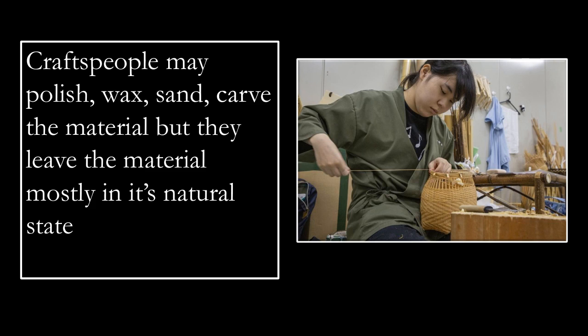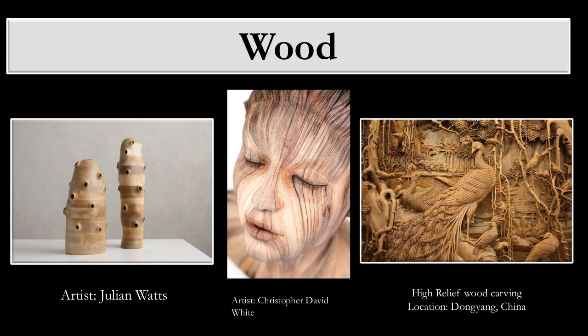Craftspeople may polish, wax, sand, or carve a material, but they leave the material mostly in its natural state. If we look at this woman over here, she's beginning to weave a basket with this natural, straw-like fiber material. These are all examples of wood. The artist has put his artistic style on it, but just using the natural surface. We've got some non-representational pieces; you can see how the wood is put together in different colors, with these openings — the artist is taking that material as it is and creating something.